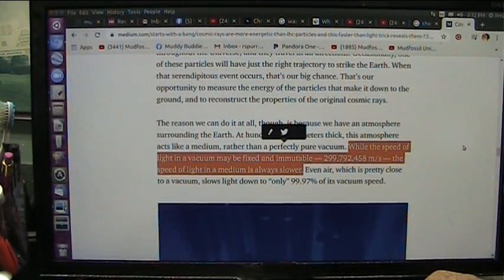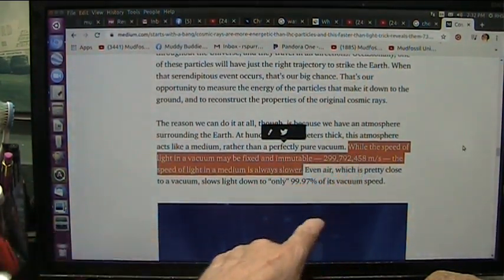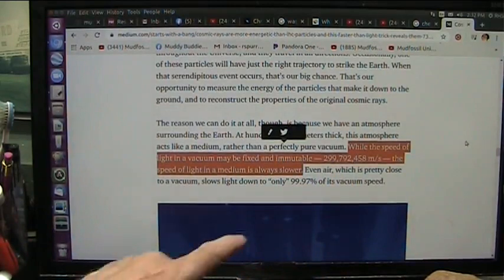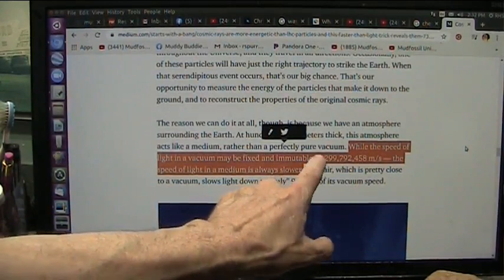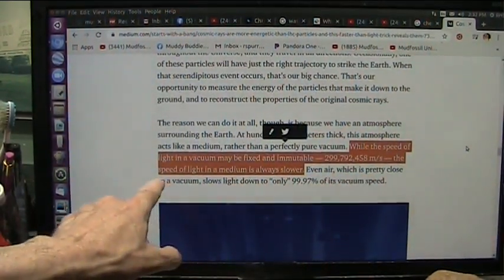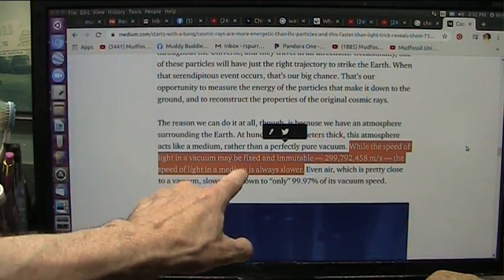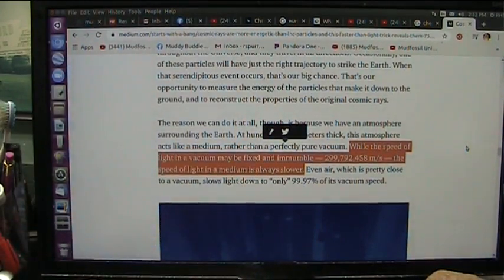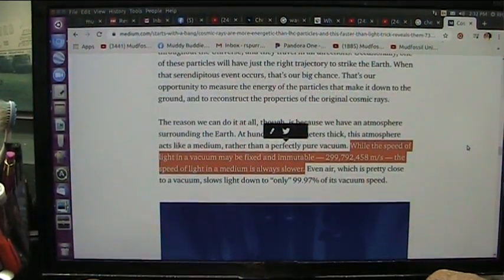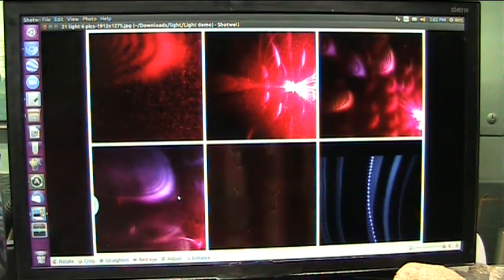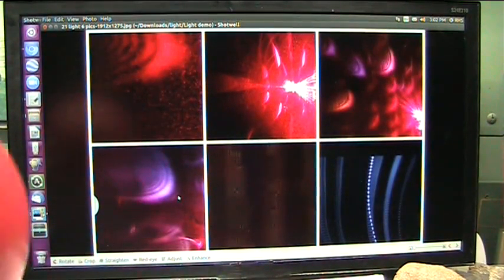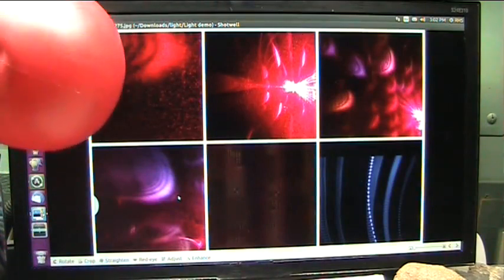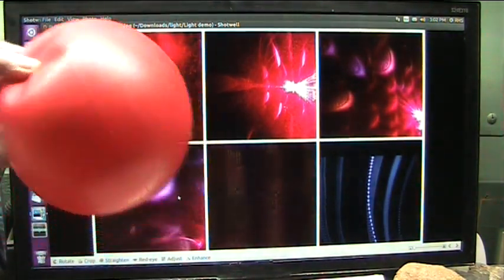All right. You saw that we're talking about the speed of the light, and it says right here, we're talking about the Cherenkov radiation. It says, while the speed of light in a vacuum may be fixed and immutable at exactly this speed of light, the speed of light in a medium is always slower. No, it's not. We sped it up. Okay, here's the electron flood there. You saw those balls that were what I consider to be photons or even atoms.